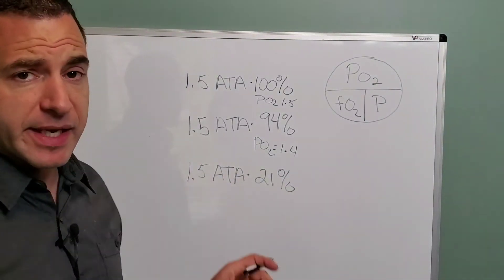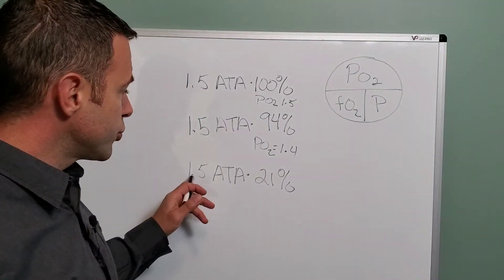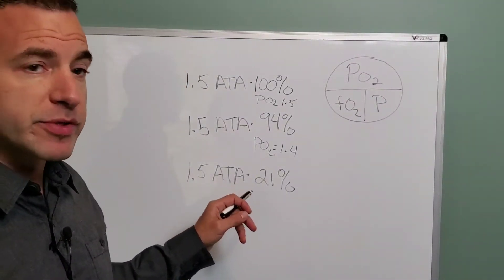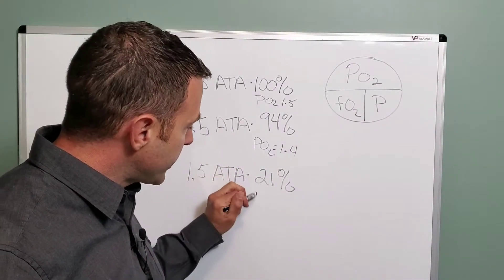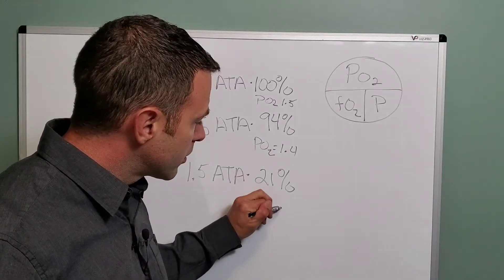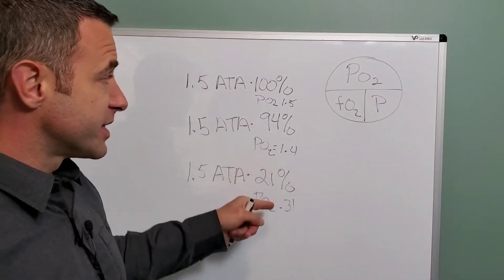Now, this last one is an example of a PO2 with air only. And so a PO2, let's say you're at 1.5 atmospheres and the percent of oxygen is 21% in air. You're looking at a PO2 of about 0.31. Massively different.